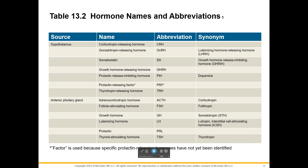The anterior pituitary also releases follicle stimulating hormone, growth hormone, luteinizing hormone, prolactin, and TSH — the thyroid stimulating hormone. Most of those synonyms I don't use; I use the actual name. But I have heard 'thyrotropin' used for thyroid stimulating hormone.